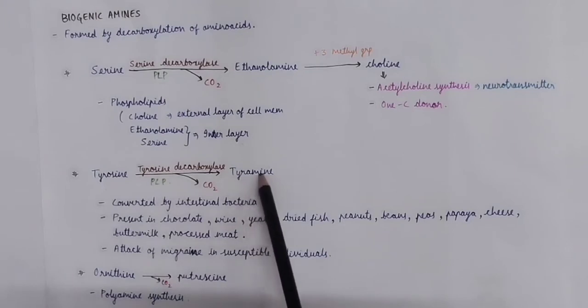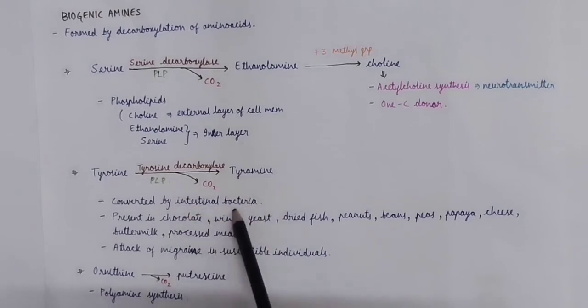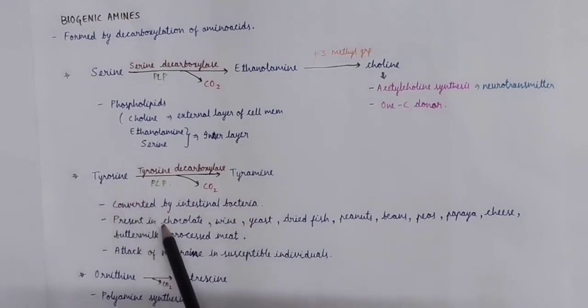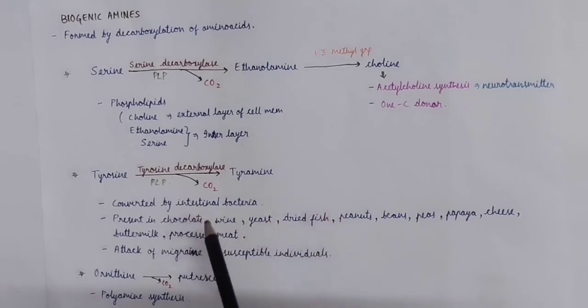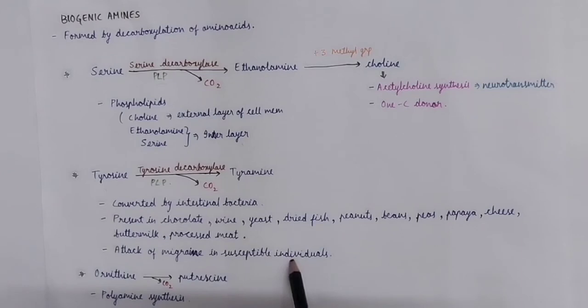Tyrosine is converted to tyramine by intestinal bacteria. Tyramine is present in chocolate, wine, yeast, dried fish, etc. It can advance the attack of migraine in susceptible individuals.